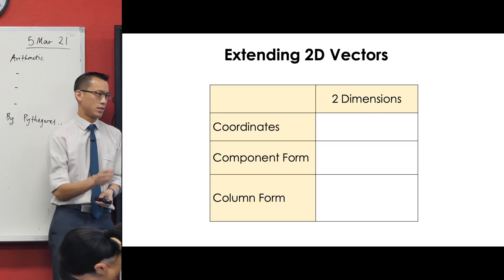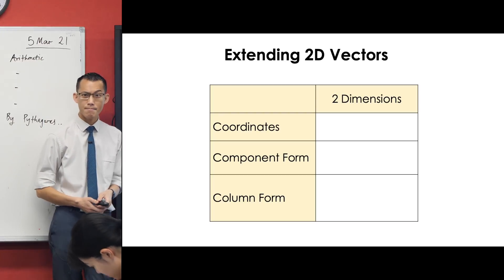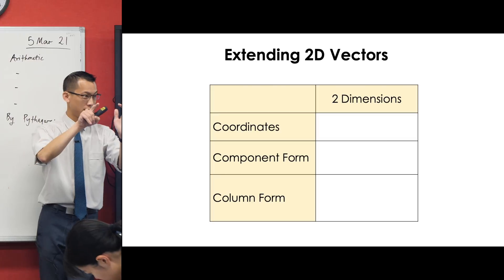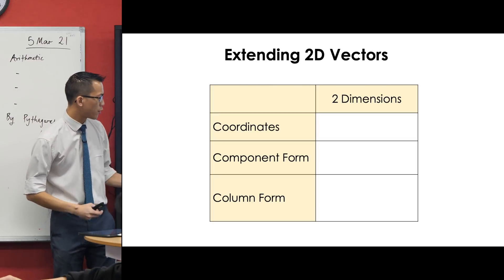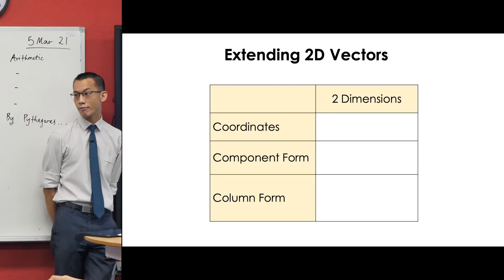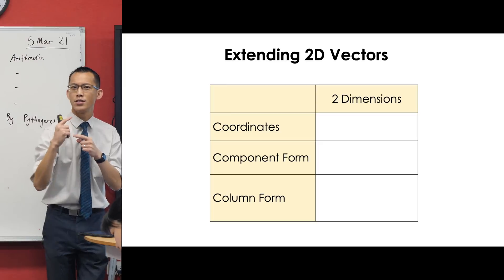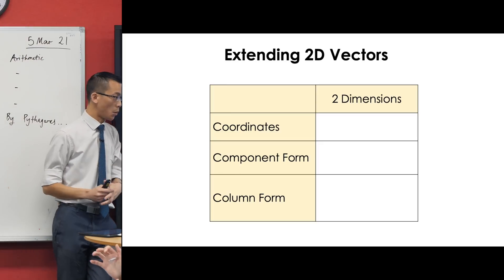Let's see how much you recall. Three different ways to represent a vector in 2D, and I've even given you the names which conveniently start with C. What does it look like when you describe the coordinates of something in two dimensions? You got your brackets, right? And then it's x comma y.